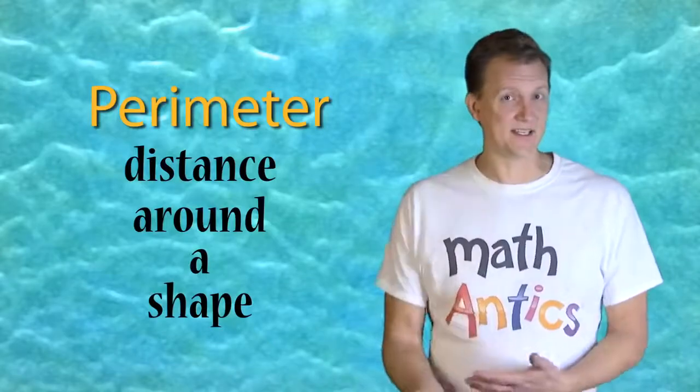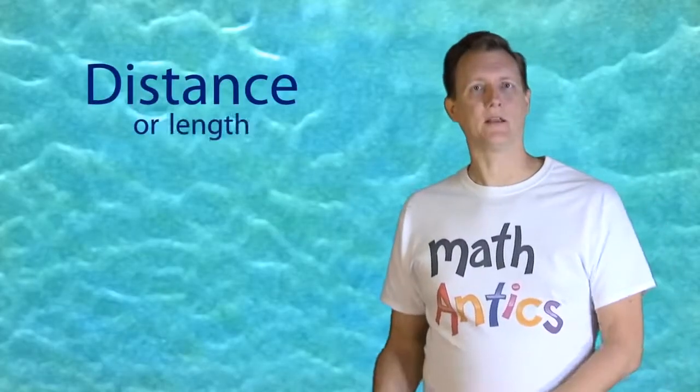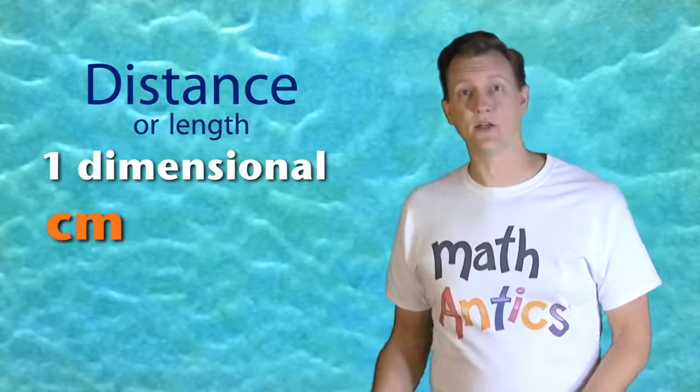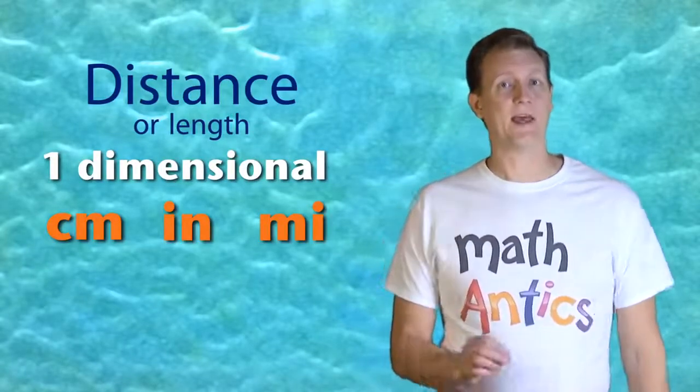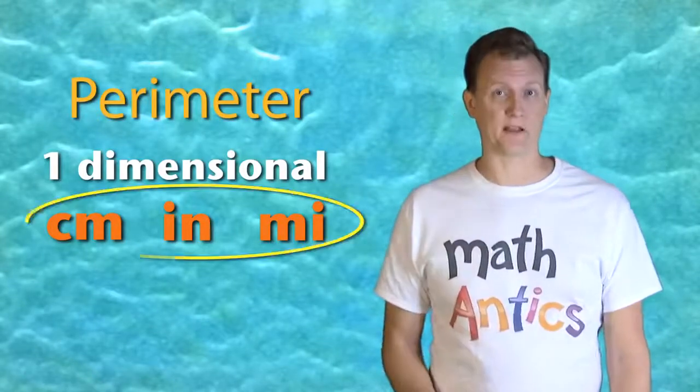Perimeter is just a fancy math term that means the distance around a shape. But what exactly does the distance around a shape mean? Distance is a one-dimensional quantity that we can measure with units like centimeters, inches, or miles. That means that perimeter is also a one-dimensional quantity that we can measure with units of length.